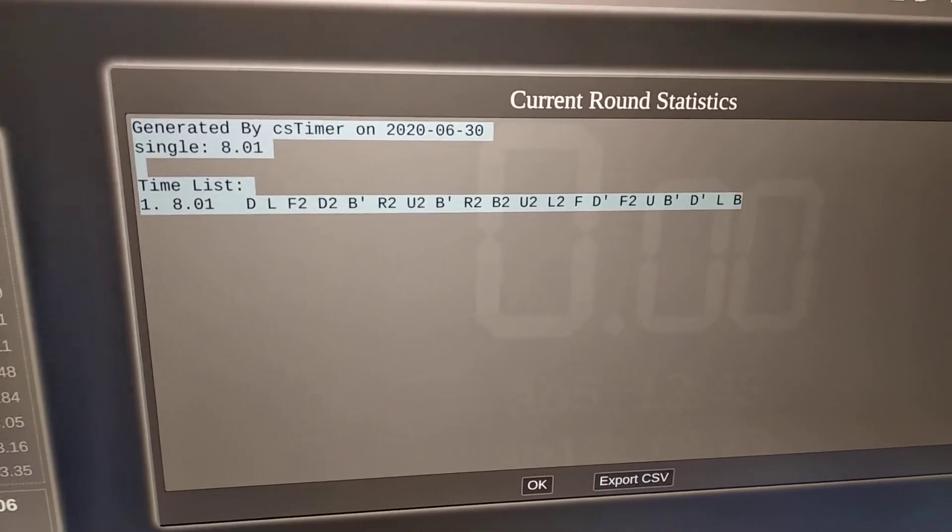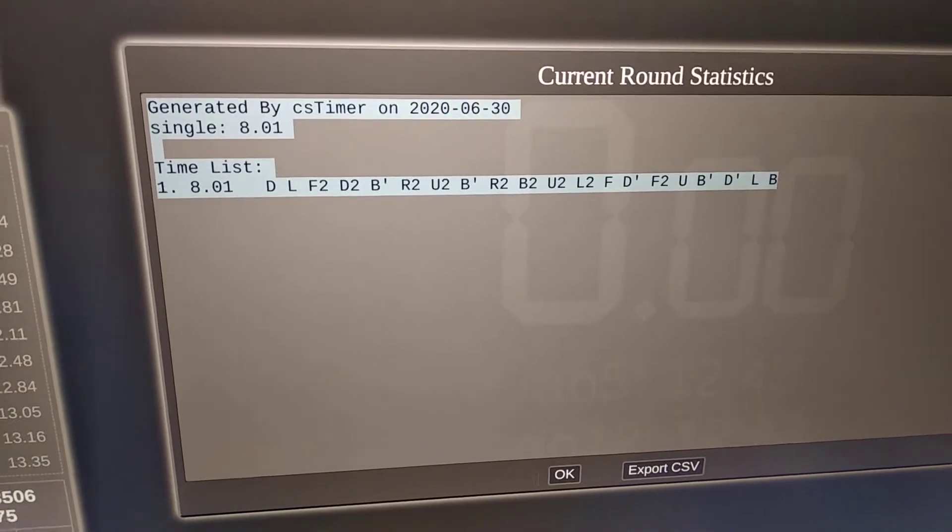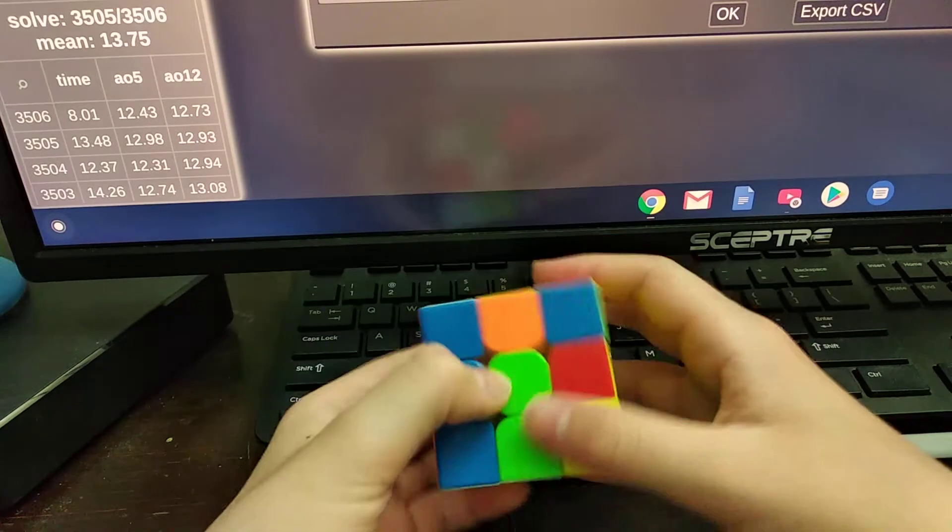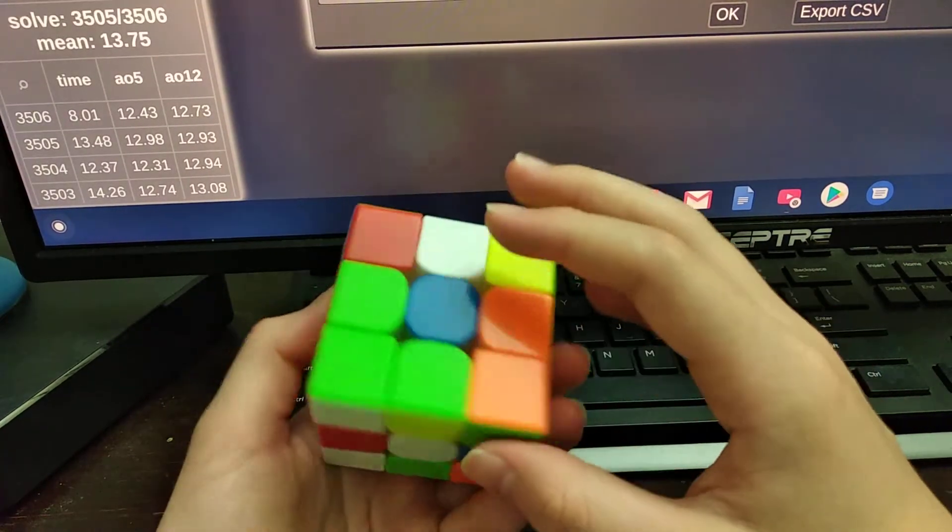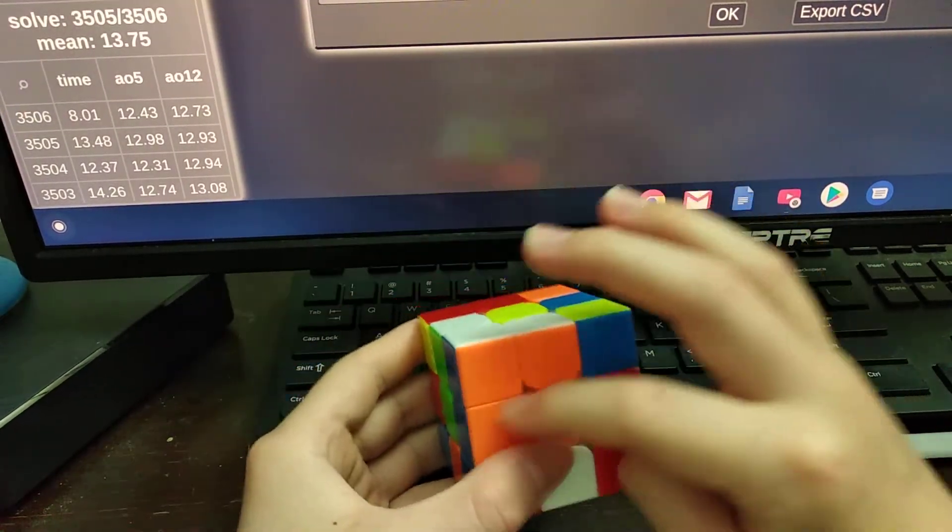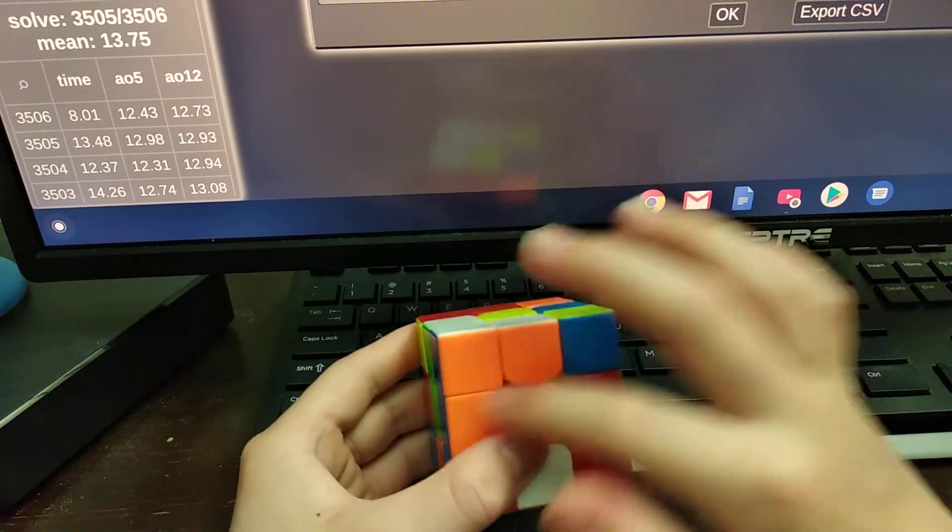So this is the scramble. I already did the scramble - make sure to do white top, green front. At first the scramble doesn't look that great, but then you see this big orange block here, which has potential for an X-cross. And you see this pair.